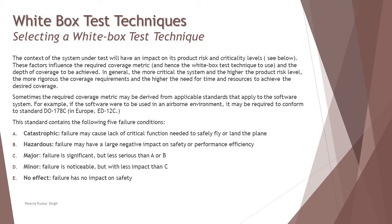The five failure conditions are: A — Catastrophic: failure may cause lack of critical functions needed to safely fly or land the plane. B — Hazardous: failure may have a large negative impact on safety or performance efficiency. C — Major: failure is significant but less serious than A or B. D — Minor: failure is noticeable but has less impact than C. E — No Effect: failure has no impact on safety.